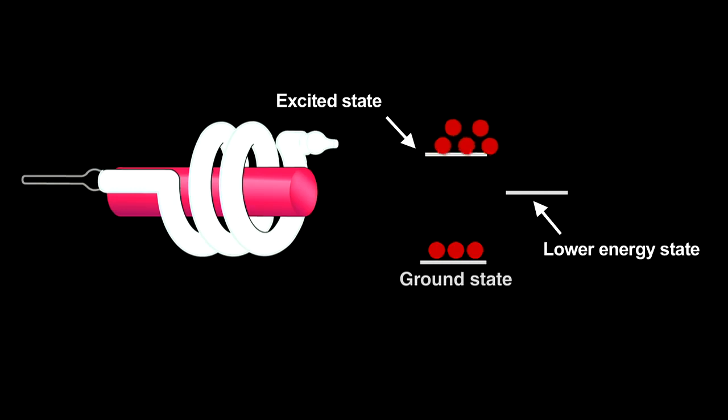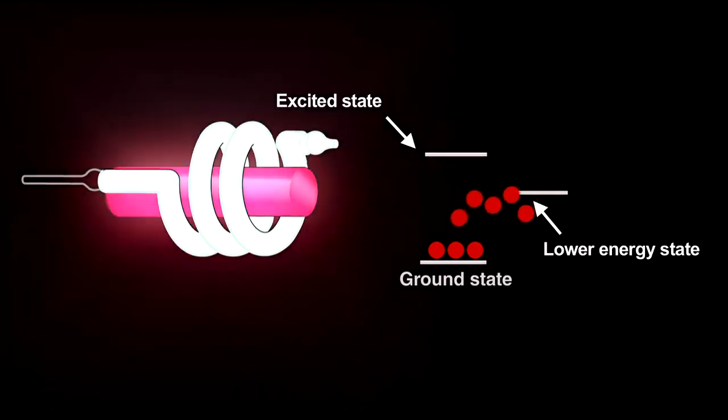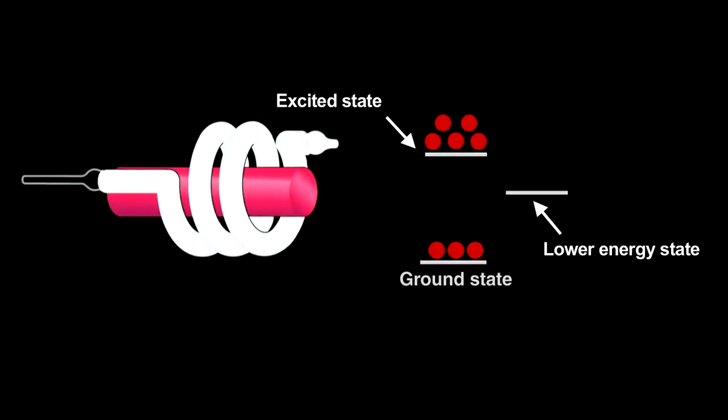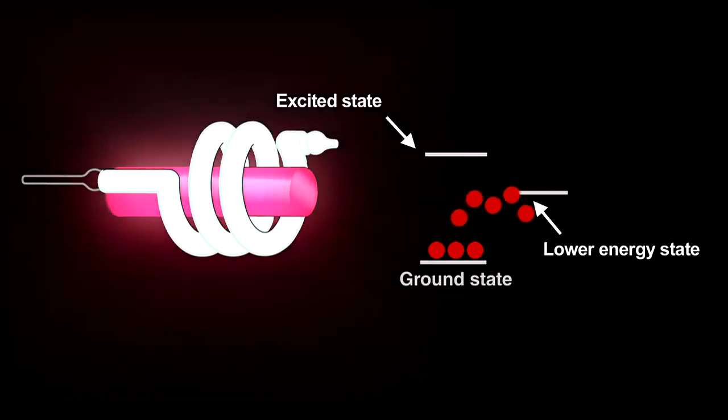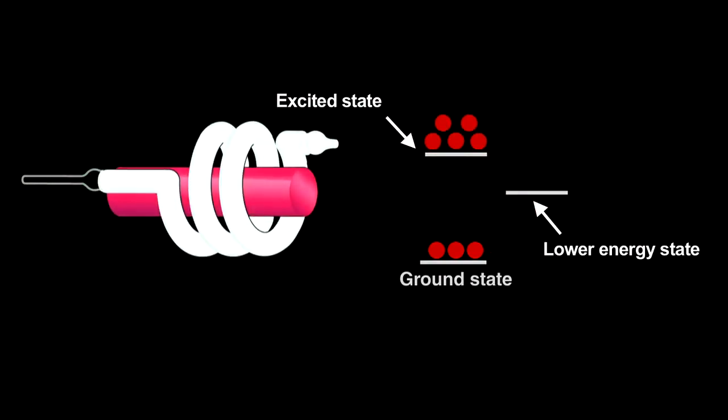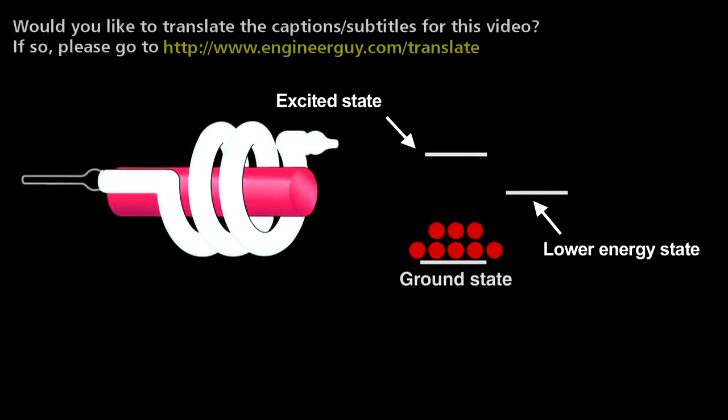Electrons from a population inversion returning to the ground state release light that starts an avalanche called stimulated emission. The photon produced when an electron decays induces other excited electrons to simultaneously decay and release nearly identical photons. That creates coherent light, meaning that the crests and troughs of every light wave in the beam match up.